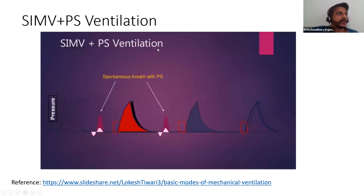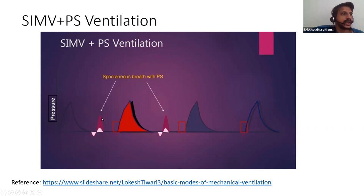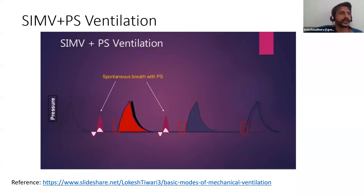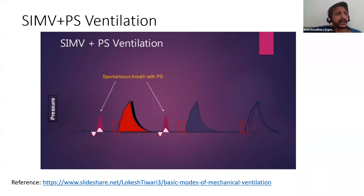SIMV — synchronized intermittent mandatory ventilation — allows the doctor to trade off between mandatory and supported breaths. When the patient is breathing, the ventilator aids with pressure support. But for a set number of mandatory breaths per minute — say five or eight — the ventilator synchronizes with the patient's breathing effort and delivers a full mandatory breath. Between mandatory breaths, it monitors the patient's spontaneous breathing. This mode is also used for patients with asthma or similar conditions where breathing requires great effort.